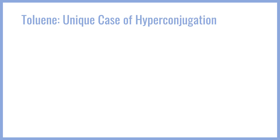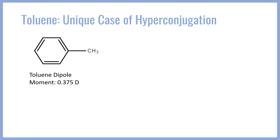Last but not least, let's look at toluene — also known as methylbenzene — which is a pure hydrocarbon consisting only of C and H. You would expect toluene to be nonpolar since it has no polar bonds. However, toluene does have a molecular dipole of about 0.375 Debye, which is strange. This doesn't make sense from an inductive perspective, and even from a standard resonance delocalization perspective it doesn't make sense, because carbon has no lone pairs or double bonds here to contribute any withdrawing or donation effect.